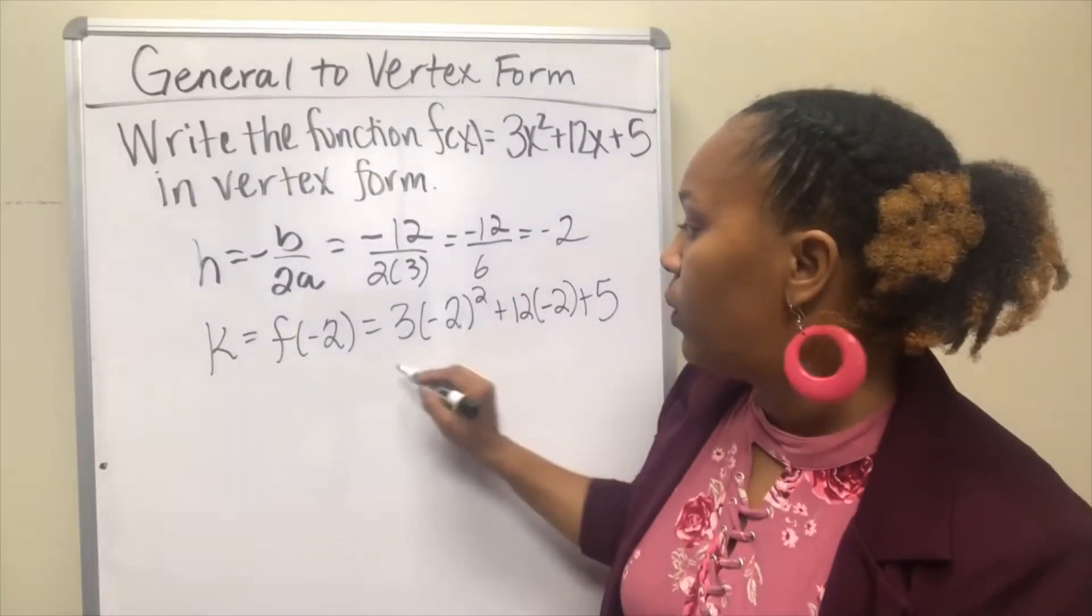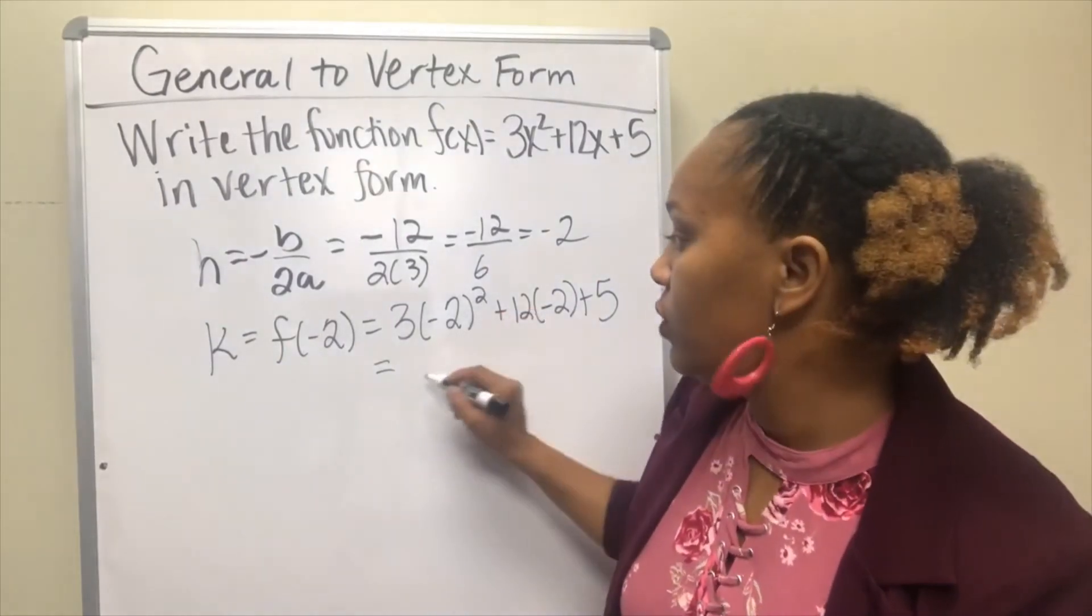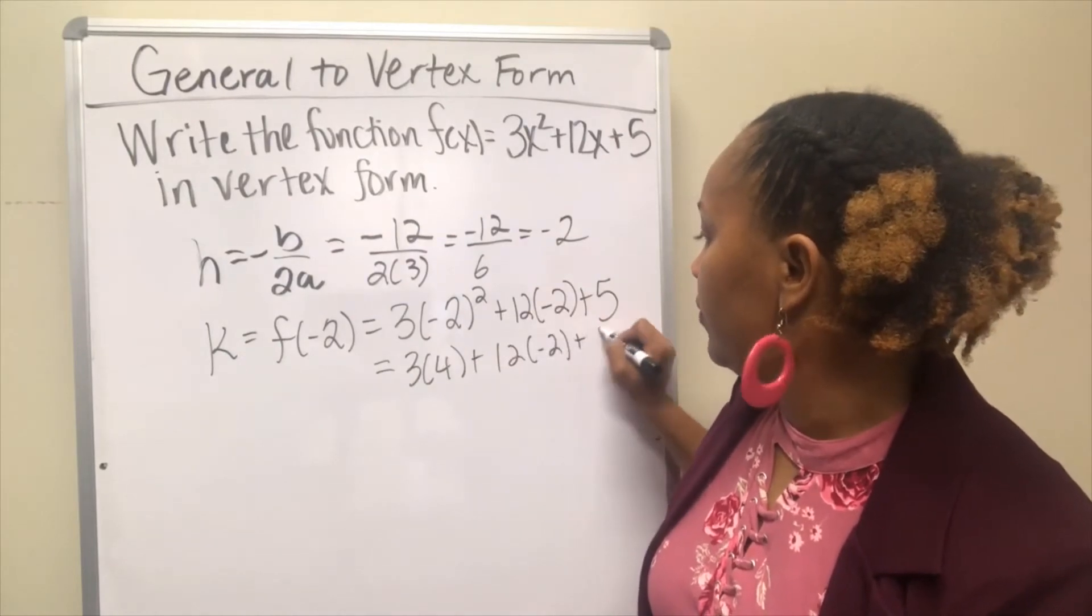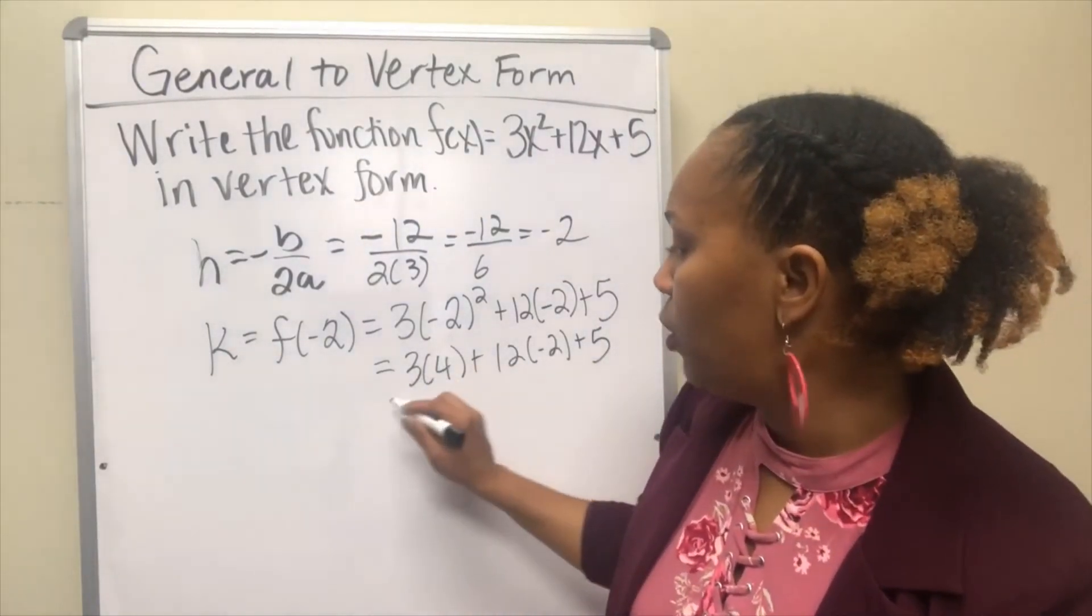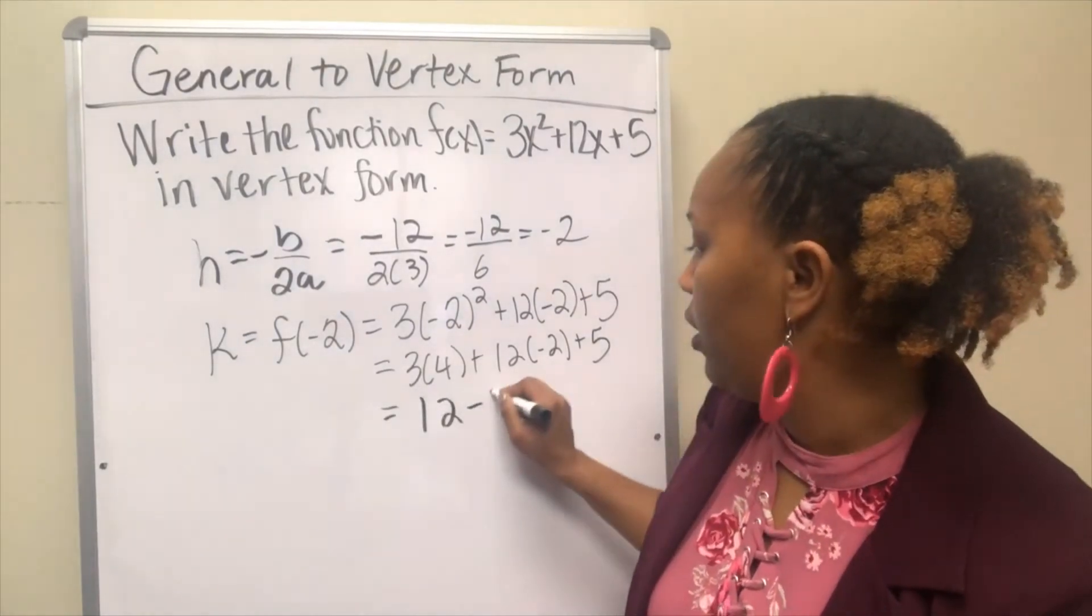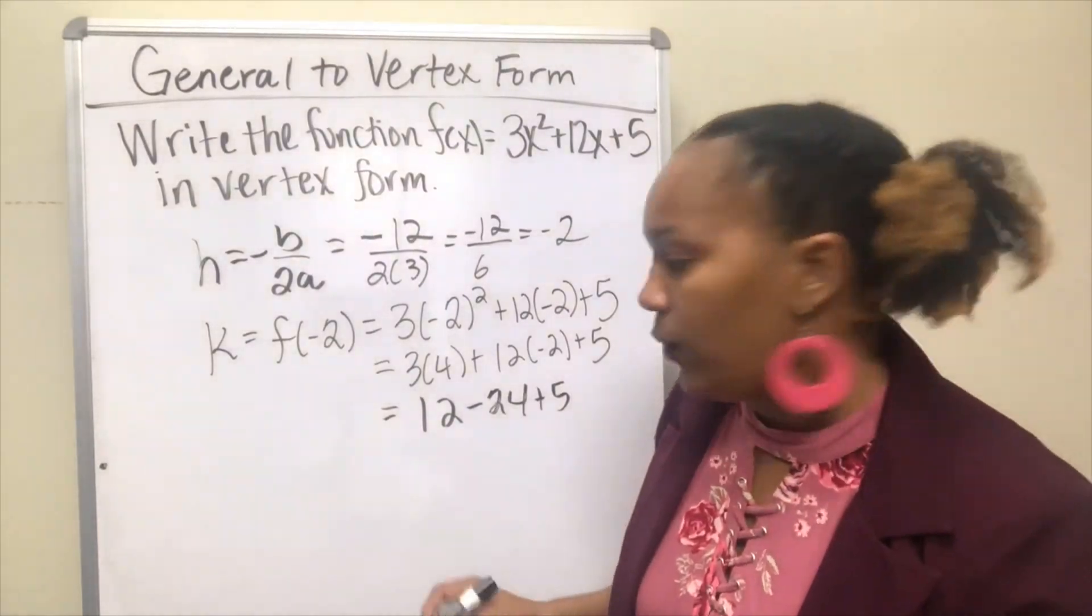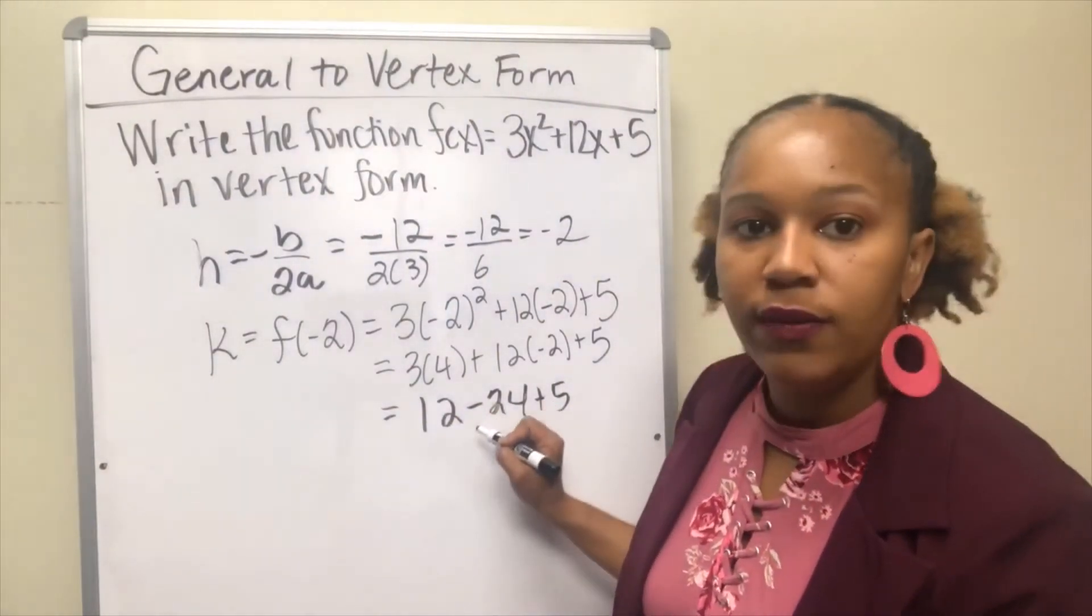So negative 2 squared, we have to do order of operations so we'll do our exponents first. So negative 2 squared is 4, and then you will multiply, so you'll get 12 here, negative 24 here, because 12 times negative 2 is negative 24, and then just simplify going from left to right. 12 minus 24 is negative 12 plus 5 is negative 7.